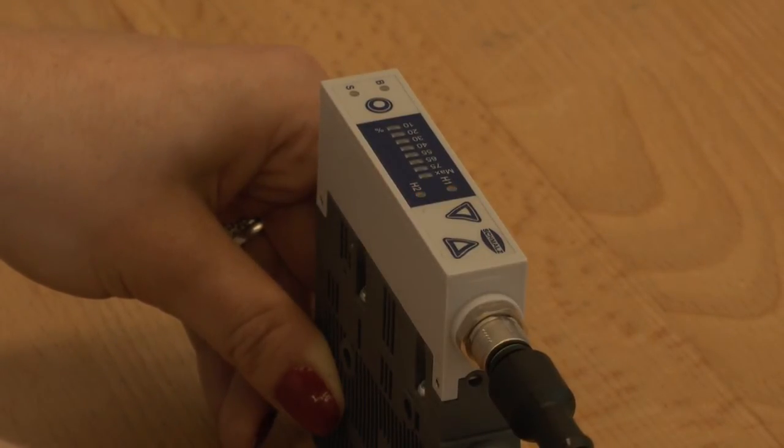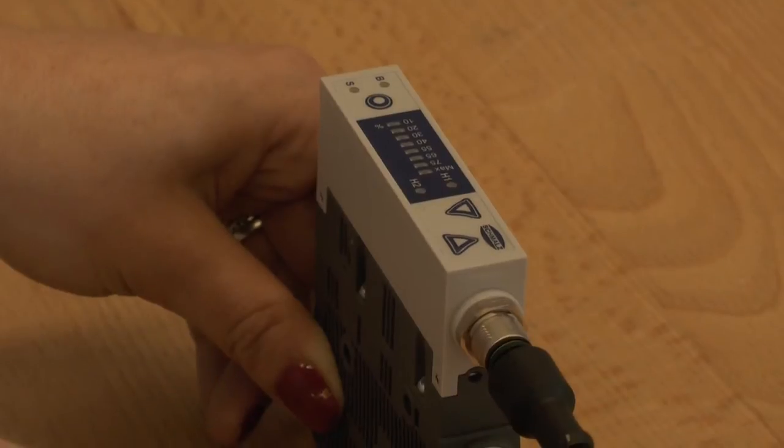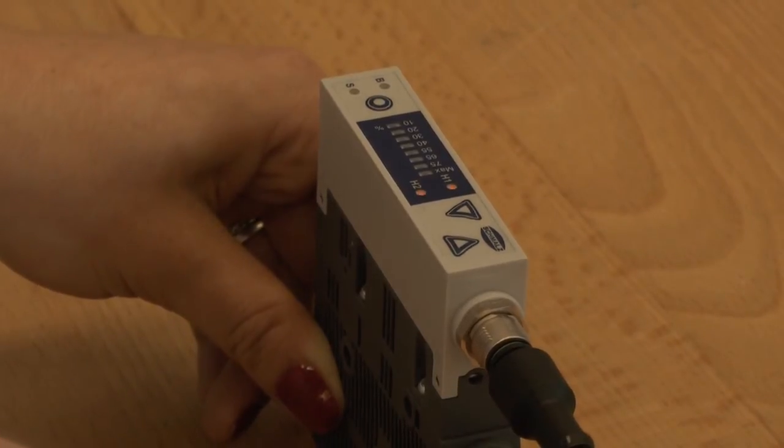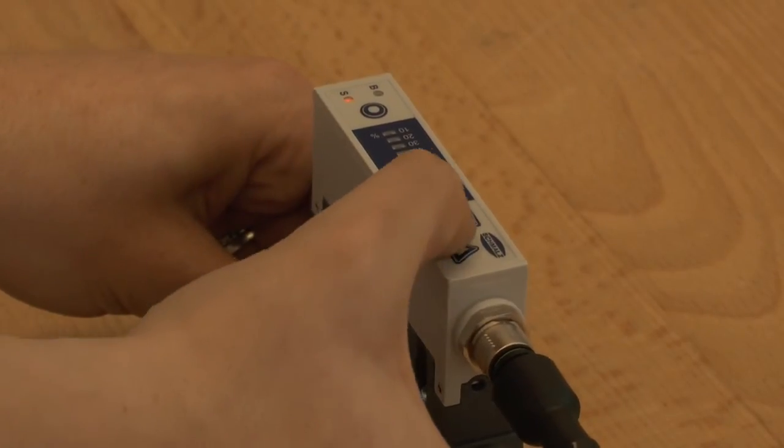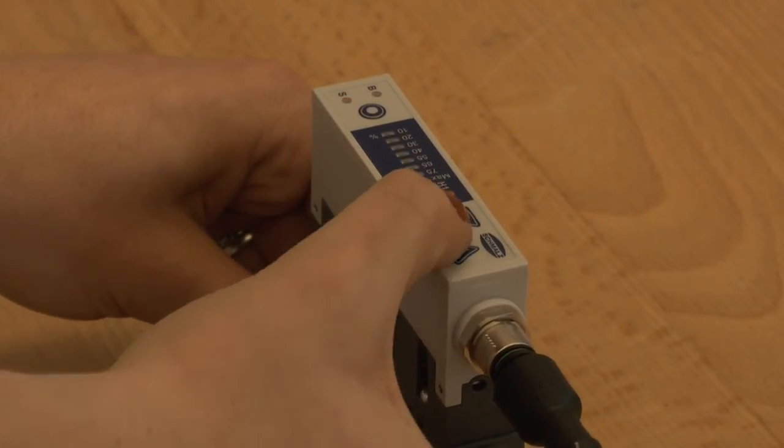Flashing of LED H1 and H2 shows that you are in the manual operation mode. In this mode, you can suck by pushing the up button and blow-off by pushing the down button.